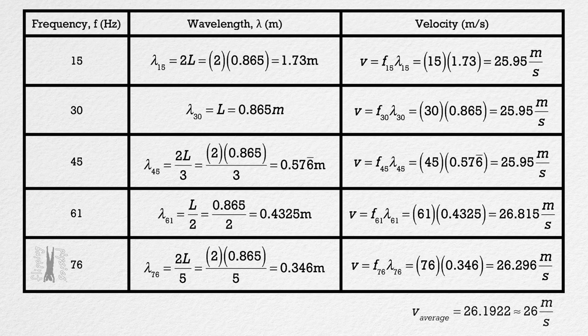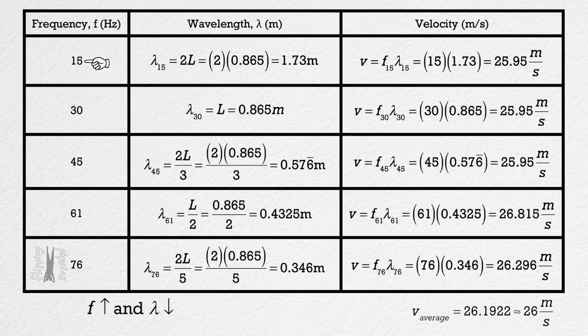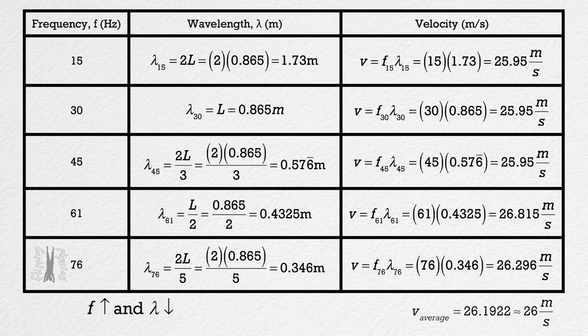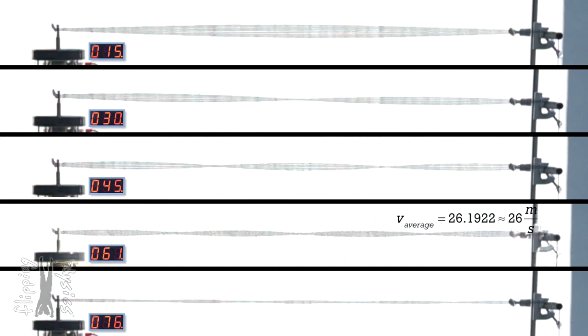Yeah. Okay, so I know earlier we showed that as the frequency increases, the wavelength decreases, which is exactly what we determined here. The frequency increases from 15 hertz to 76 hertz and the wavelength of the wave decreases from 1.73 meters to 0.346 meters. However, are you actually telling me all of the standing wave patterns have roughly the same speed of 26 meters per second? I mean, that just does not make sense. Could you go back to the real demonstration again?